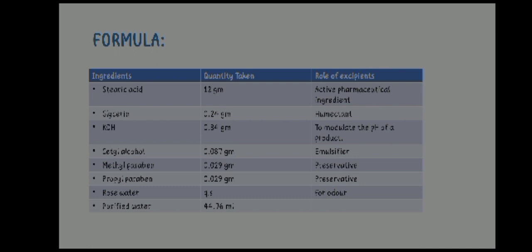The formula is presented in a table of ingredients, quantities, and roles. Stearic acid: 12 g — active pharmaceutical ingredient. Glycerin: 0.24 g — humectant. KOH: 0.84 g — to modulate the pH. Cetyl alcohol: 0.087 g — emulsifier. Methylparaben: 0.029 g — preservative. Propylparaben: 0.029 g — preservative. Rose water: quantity sufficient — for odor. Purified water: 44.76 mL.